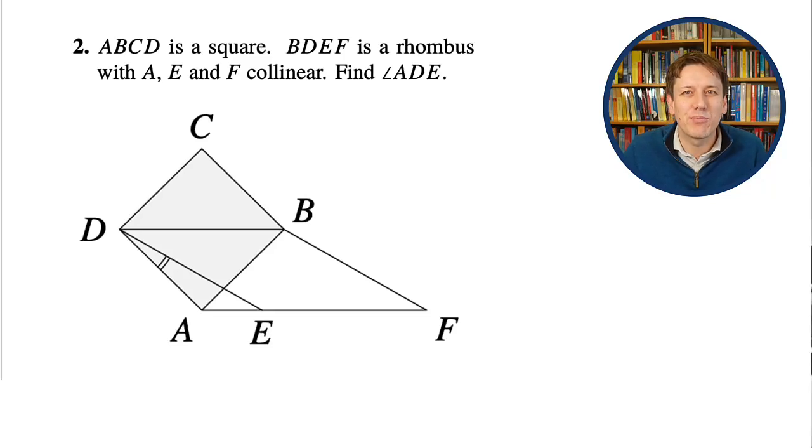This is a very tricky little geometry problem from the Hamilton Olympiad. Can you work out the missing angle here if ABCD is a square, BDEF is a rhombus, and A, E, and F are collinear, that is they make a straight line?